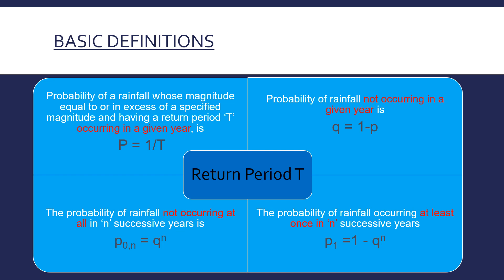Next we need to know the probability of rainfall in a given year. If the return period of a rainfall is 10 years, and this year we received 50 centimeters, what is the probability or chance of getting the same 50-centimeter rainfall next year? That is known as the probability of exceedance. If the return period is 10 years, then in every year it will be 10%, that is 1 by 10.